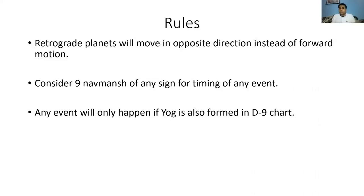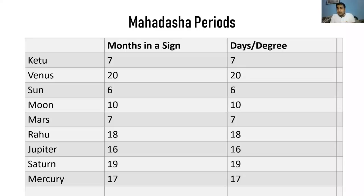The rule for retrograde planets, Rahu, Ketu, and retrograde planets: if you're running the Mahadasha of a retrograde planet, that planet will always go in the opposite direction. To narrow down a large period — for example Venus with 20 months in a sign — divide 20 months into nine parts, one for each Navamsha. That comes to almost 66 days per Navamsha, so the biggest Mahadasha is narrowed down to approximately two months, giving you the specific time frame when a particular event will happen.